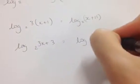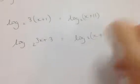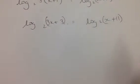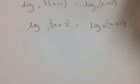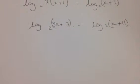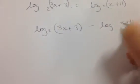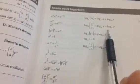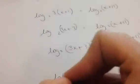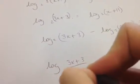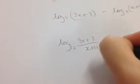I have two options here, but I'm going to use rule 2 to show it. I bring (x plus 11) over to the left: log (3x plus 3) in base 2 minus log (x plus 11) in base 2 equals 0. Using rule 2, subtraction becomes division: log of (3x plus 3) all over (x plus 11) in base 2 equals 0.